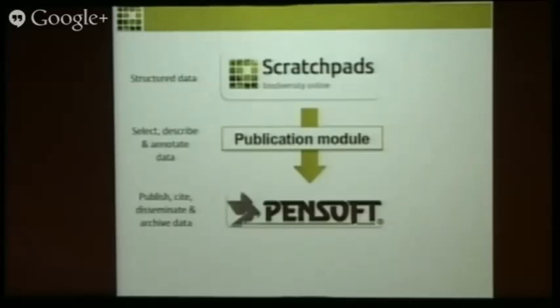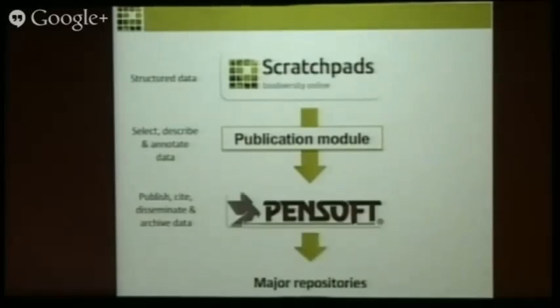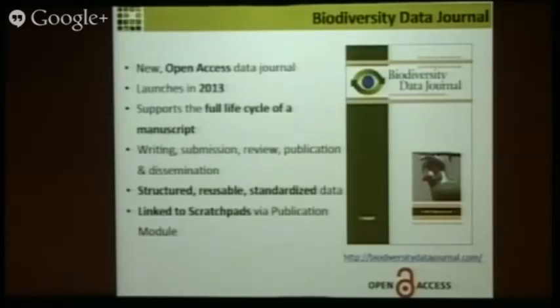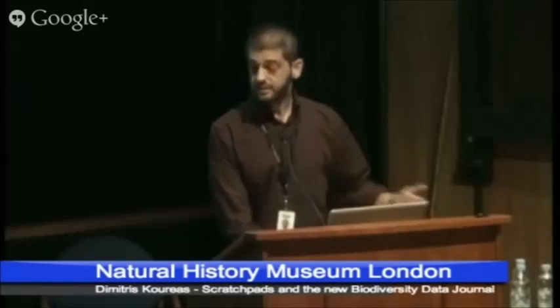From the journal, all the components can also be fed to the different major repositories. The new journal we're talking about is the Biodiversity Data Journal. It's open access and peer reviewed, launching in 2013. It supports the full life cycle of a manuscript digitally — from writing, submission, and review through to publication — and the dissemination of results in a structured, reusable, and standardized data format. It is linked to Scratchpads via the publication module.